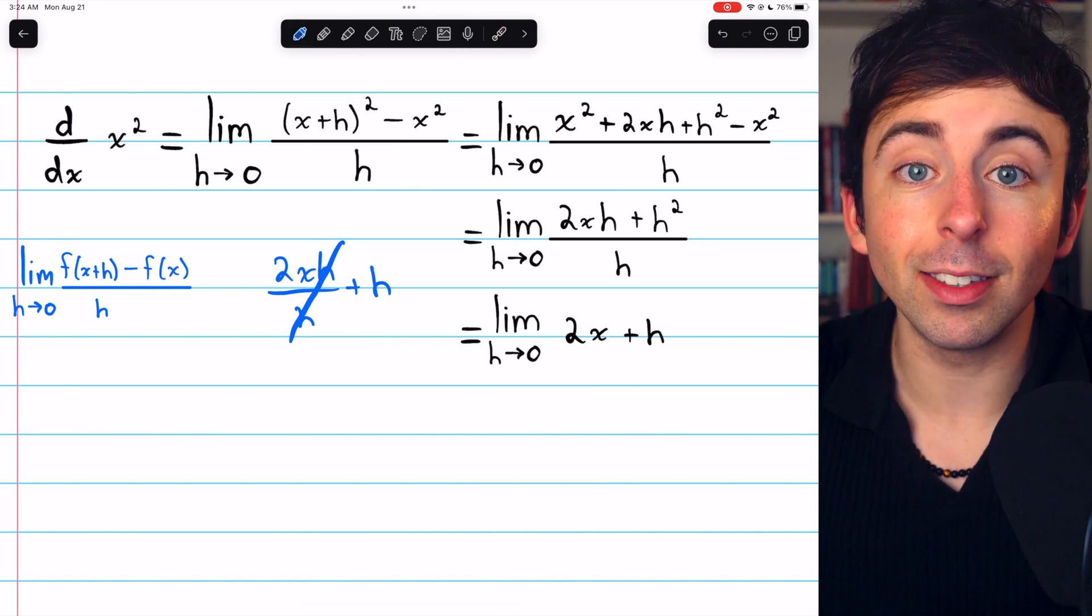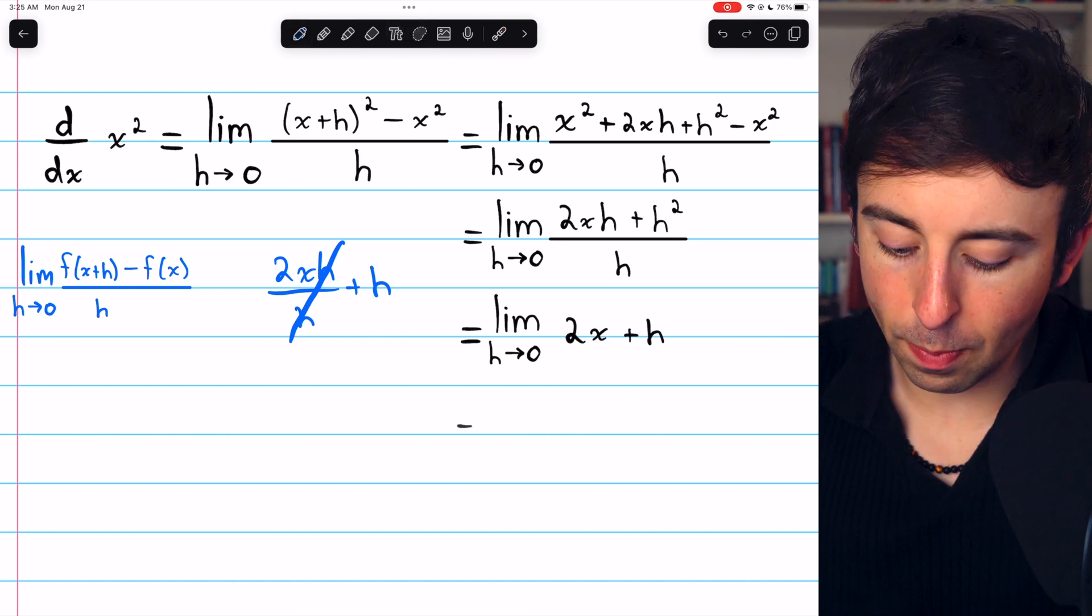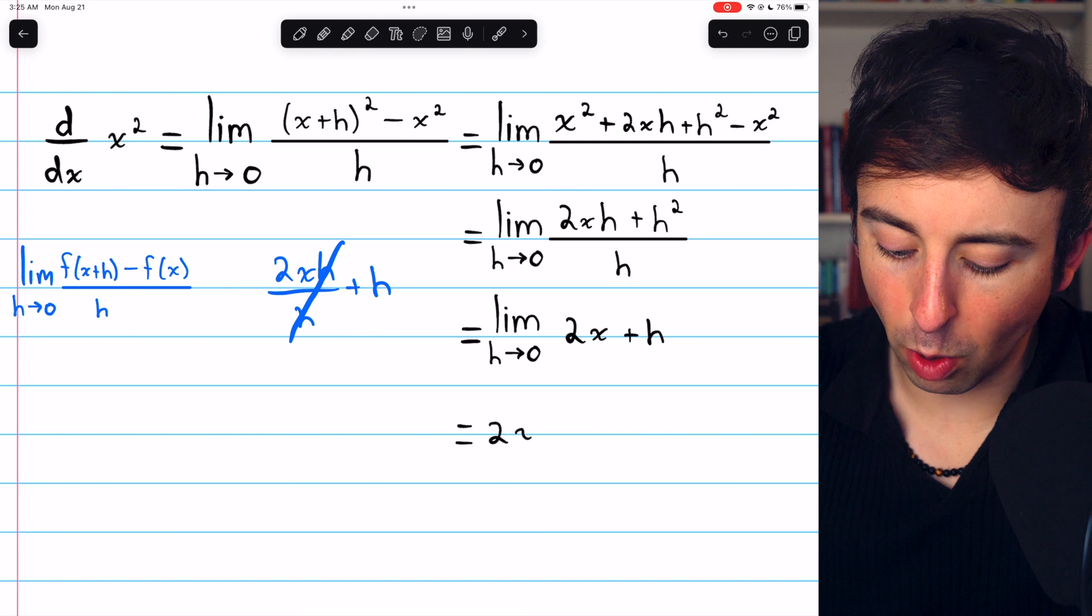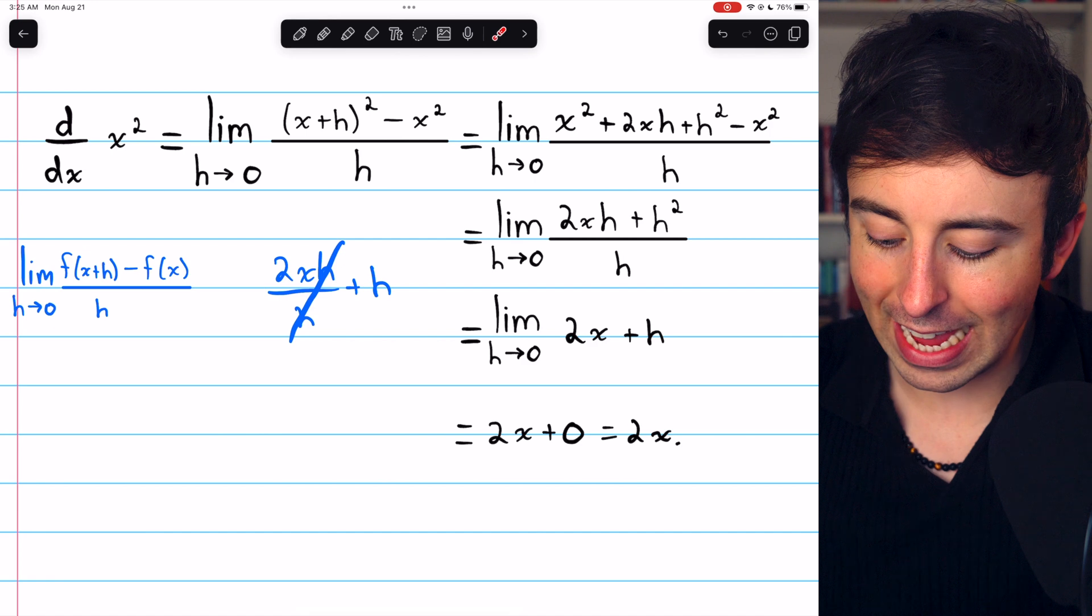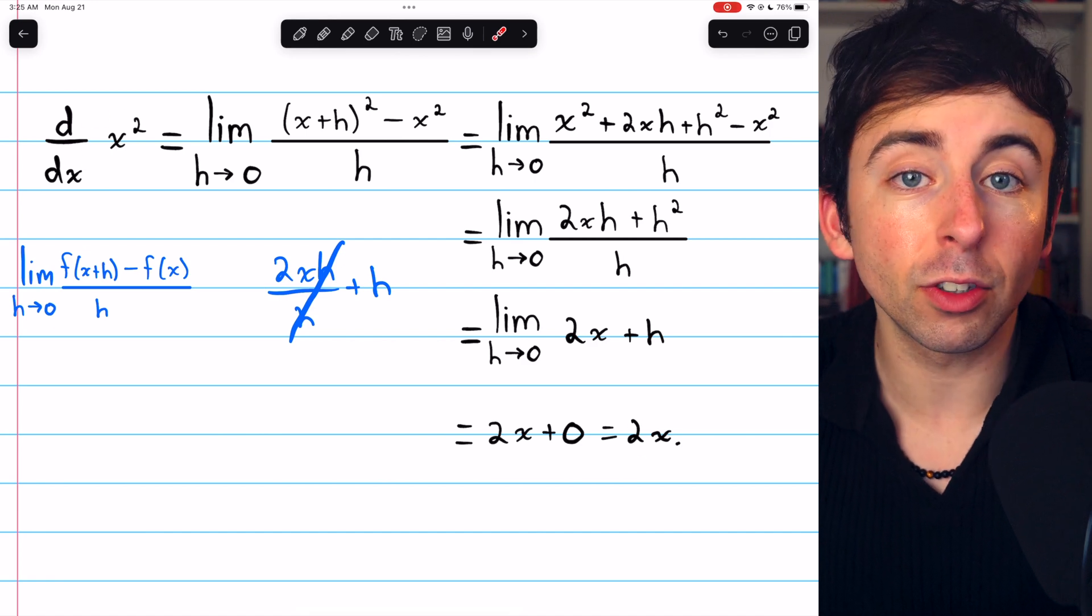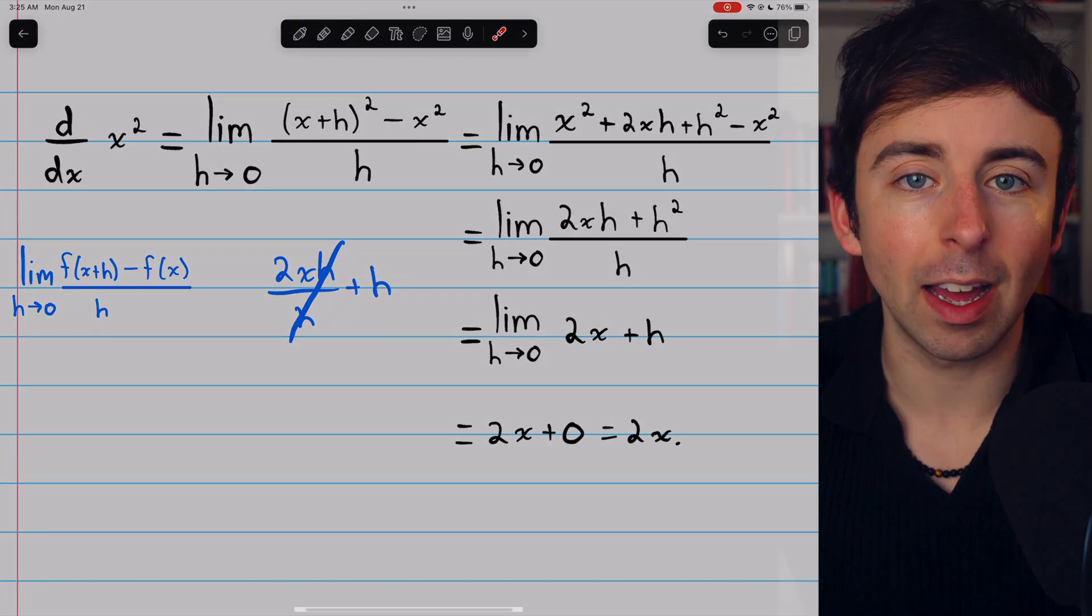At this point, we can just plug zero in for h. When we plug zero in for h, what we get is 2x plus zero, which of course is 2x. And that is the derivative of x squared, and how you find it using the limit definition.